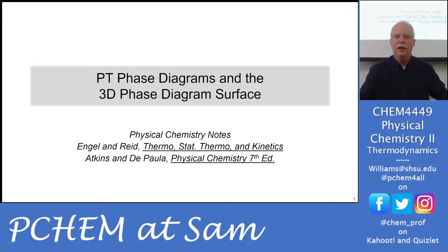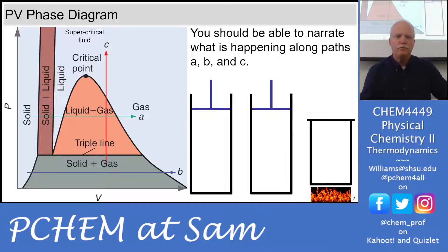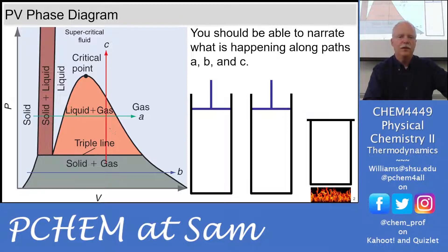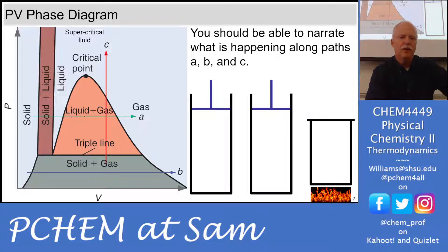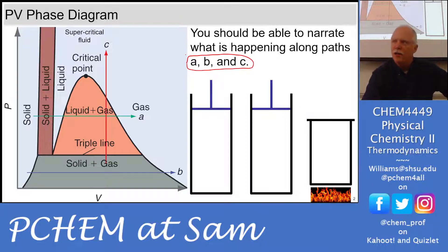Pressure-temperature, and then we'll introduce the 3D phase diagram surface. Let's go through the PV phase diagram just to review what happens with these three different lines and to emphasize what's going on with boiling, freezing, melting, and condensation. We have these different paths here, and this is one thing you should be able to do given any phase diagram — narrate these paths. If you can't narrate these paths, you can't answer questions about phase diagrams. Let's start in the solid for path A.